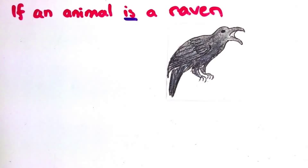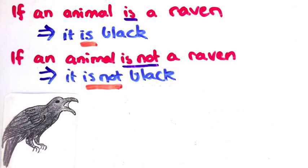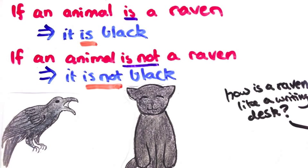That would be like saying, if an animal is a raven, it is black, means that if an animal isn't a raven, then it's not black. That clearly isn't true. If an animal isn't a raven, all you can say is that it's not a raven. You can't infer anything about its color.